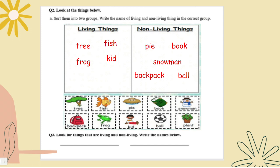Tree, fish, frog, kid, and plant are all living things because they move, breathe, grow, and reproduce. In this group non-living things you have pie, book, snowman, backpack, and ball. They cannot move, breathe, grow, and reproduce. That is why they are non-living things.